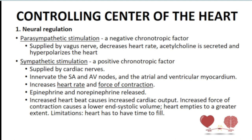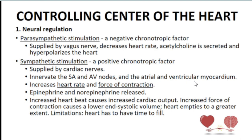Sympathetic stimulation gives a positive chronotropic effect — the opposite of parasympathetic, making the heart rate faster. It does this by sending a signal via cardiac nerves, which are connected to the pacemakers of the heart, specifically the SA and AV nodes. When the SA and AV nodes are triggered by the cardiac nerves, heart rate increases. Moreover, the cardiac nerves also trigger the atrial and ventricular myocardium — the pectinate muscles and trabeculae carnea — leading to a stronger force of contraction.